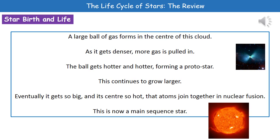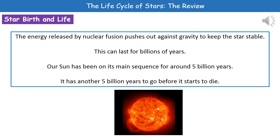That protostar is going to continue to grow larger, and eventually it's going to get so big and the center of it gets so hot that the atoms that make it up start joining together in this process of nuclear fusion. When those atoms are joining together in nuclear fusion, we've got a main sequence star. The energy released by nuclear fusion pushes out against the gravity, which keeps the star stable.